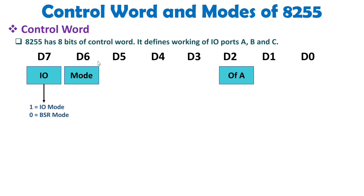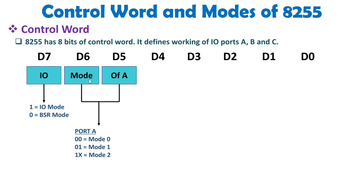D5 and D6 bits define in which mode port A will function. Port A functions with mode 0, mode 1, and mode 2. Port B functions with mode 0 and mode 1. Port C functions in BSR mode only, and also provides handshaking signals for mode 1 and mode 2. D6 and D5 define the mode of port A: if 00, port A is in mode 0; if 01, port A is in mode 1; if 1x (one don't care), port A is in mode 2.